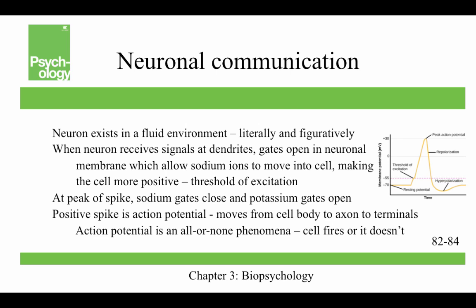The neuron exists in a fluid environment. In a resting state, sodium is at higher concentrations outside the cell and tends to move inward. Potassium is more concentrated inside the cell. When the neuron receives signals at its dendrites, gates open in the neuronal membrane, allowing sodium ions to move into the cell and making it more positive. This is the threshold of excitation, when the neuron becomes active and the action potential begins. At the peak of the spike, the sodium gates close and the potassium gates open, and the cell quickly begins repolarization. The positive spike is the action potential, which travels from the cell body down the axon to the terminals.